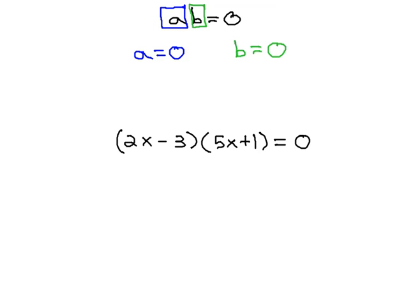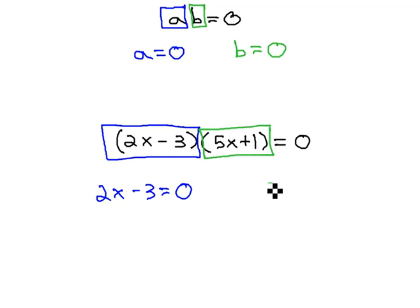Because one of the factors must be 0. Either the first factor, 2x minus 3 equals 0, or the second factor, 5x plus 1 equals 0.